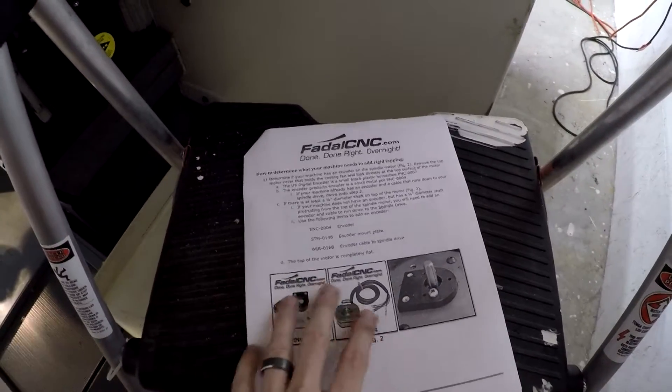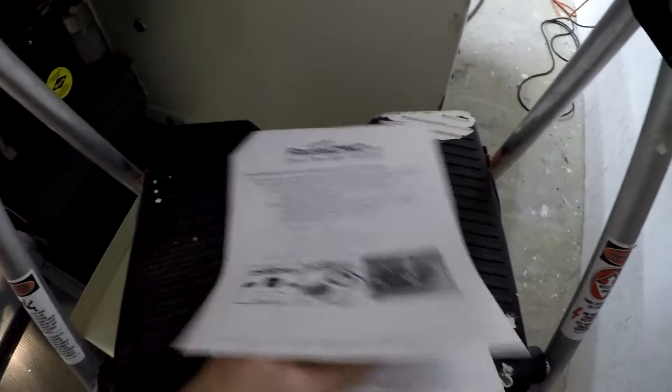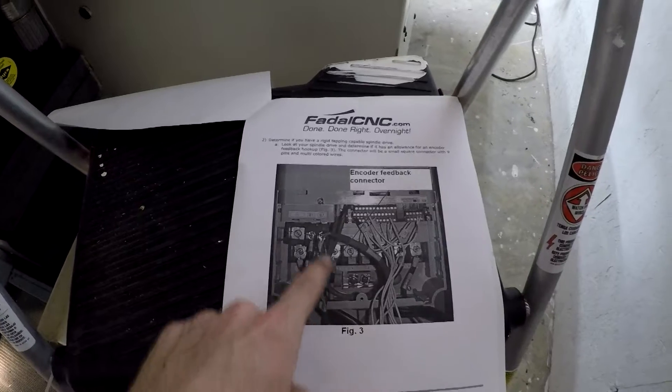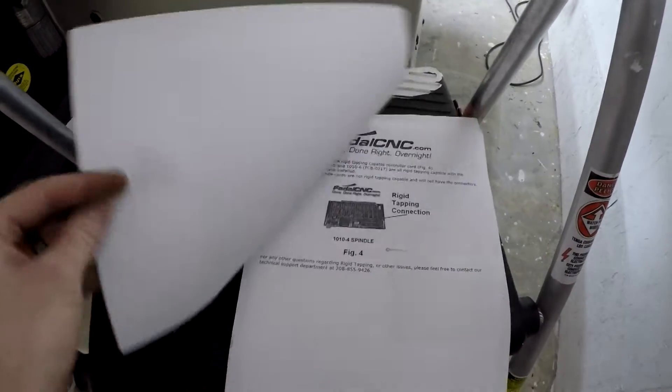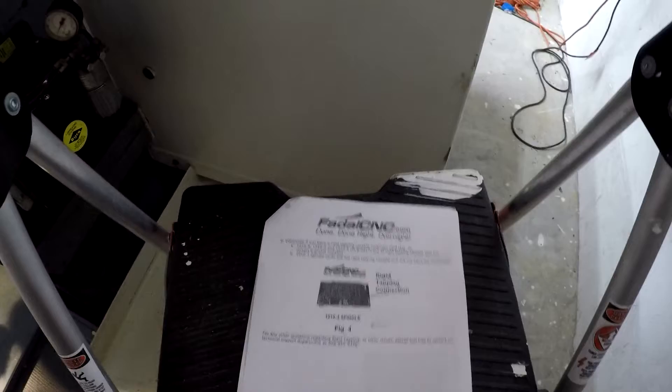And then what's the last thing? So they also go over what components you would need if you wanted to add it, if you don't have it. And then here is the plug that I just showed you. They have it wrapped around. And then the last page is for the actual card, the controller card for the spindle.